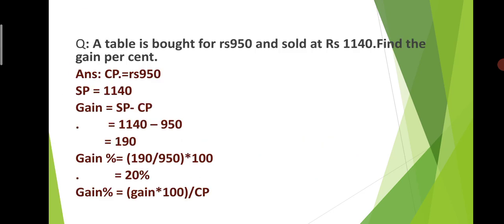We have important Profit and Loss math problems and their solutions here. I will explain them clearly. First question: A table is bought for Rs. 9.50 and sold at Rs. 11.40. So the table was bought at Rs. 9.50 and sold at Rs. 11.40.